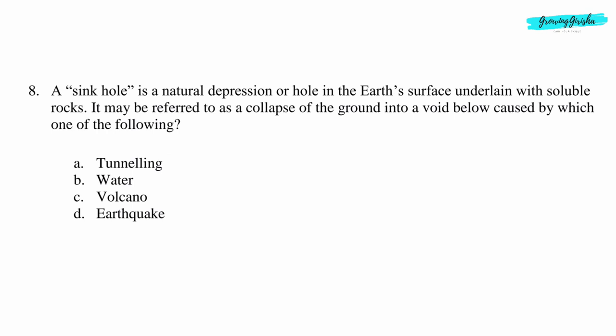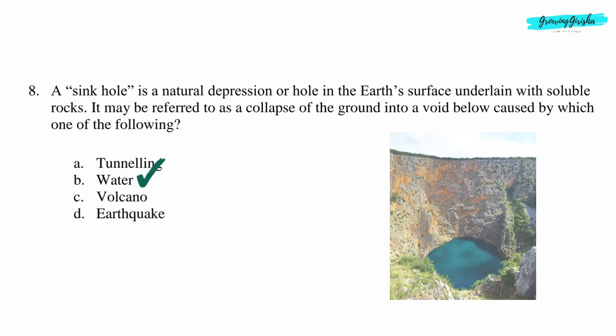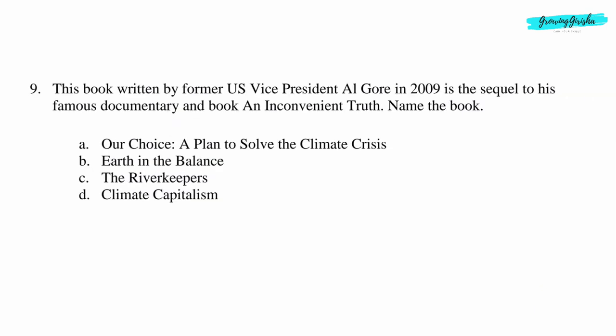Question 8: A sinkhole is a natural depression or hole in the earth's surface underlain with soluble rocks. It may be referred to as a collapse of the ground into a void below. What causes a sinkhole? Option B: Water is the cause of a sinkhole.